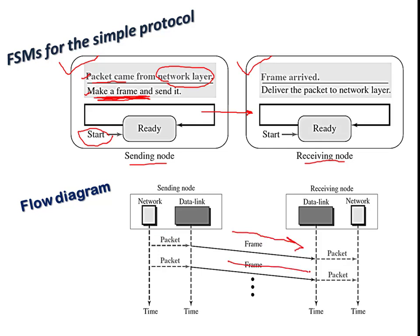This flow diagram represents the continuous process of data transfer. The sending node continuously sends frames one after another without worrying about what is happening at the receiver side — whether it is processing, or if there are any data losses. The sender just continuously sends packets, not thinking about what the receiver is performing.